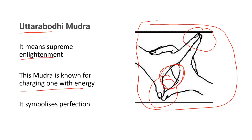Uttara Bodhi Mudra indicates that the person is charged with energy — sometimes we do this mudra when we are in a jolly mood. This mudra is also a symbol for perfection.